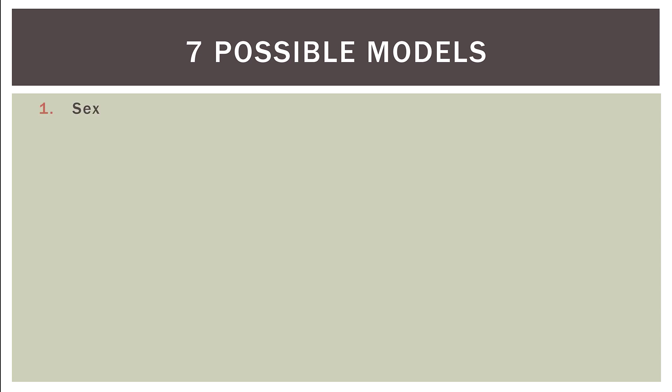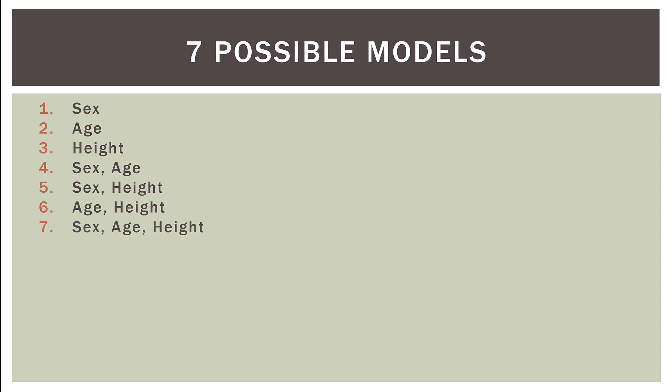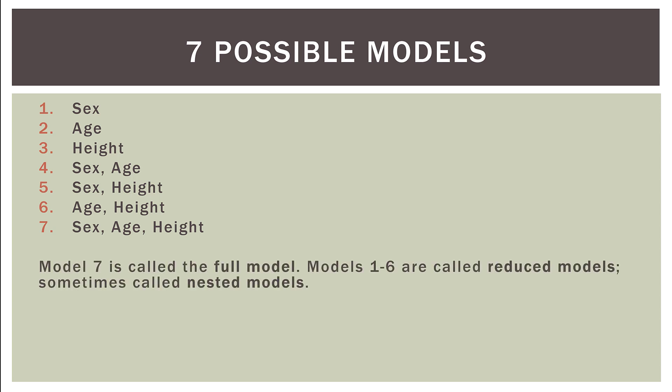There are seven possible models. We could use just biological sex, just age, or just height — three single-variable models. We could use combinations: sex and age, sex and height, age and height, or all three together. Model seven — sex, age, and height — is called the full model. Models one through six are called reduced models, or sometimes nested models, because they are nested subsets of the full model.